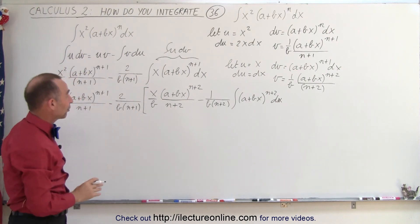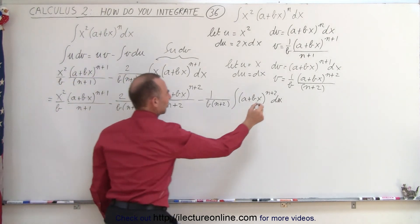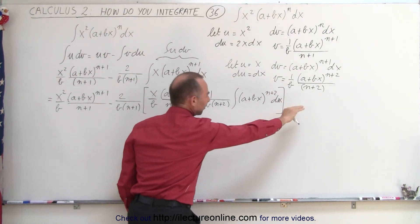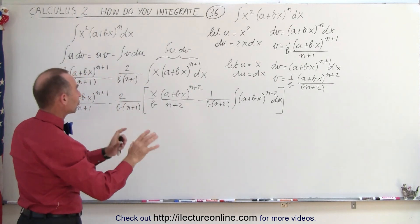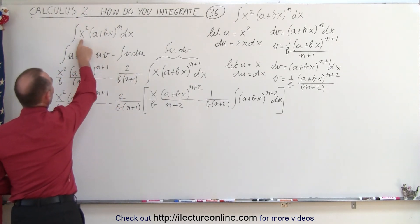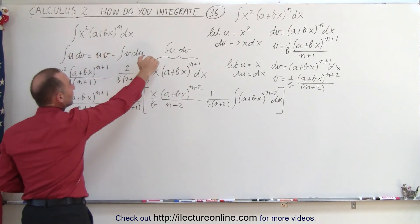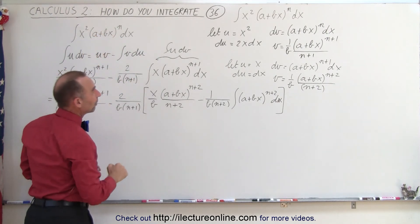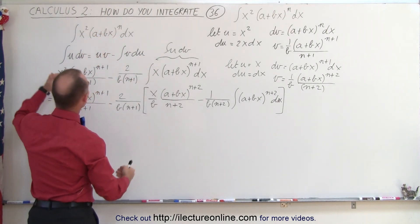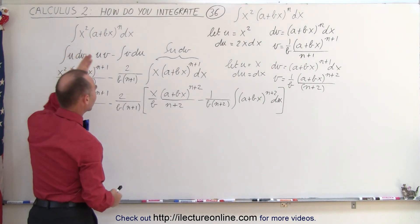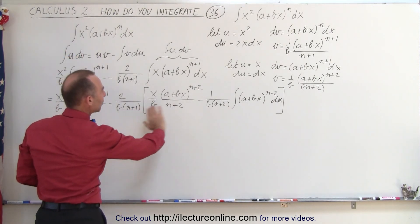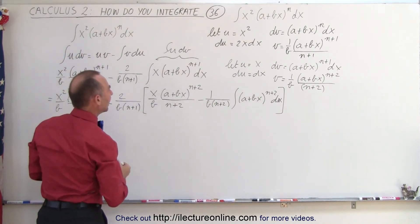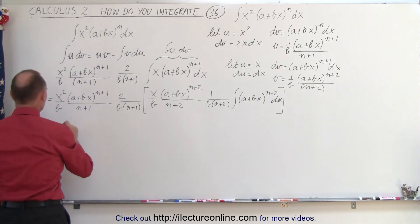And that's the easy integral I was looking for. Of course, I should close my parenthesis — we still have a plus C, but we'll add that at the end. Notice what I was trying to do: get rid of the x squared so I can just integrate this portion by using integration by parts twice. We got rid of the first power of x, then the second power of x, and now we're ready to go ahead and integrate.